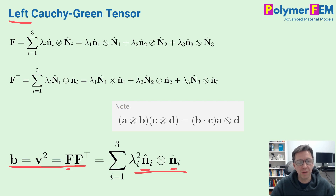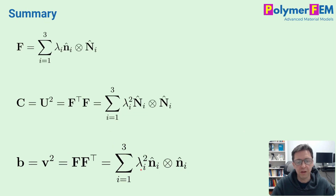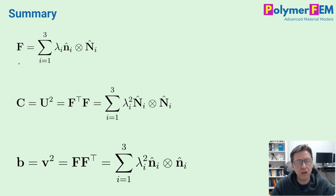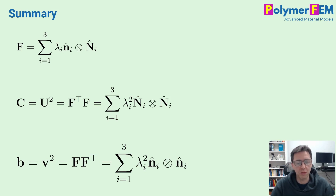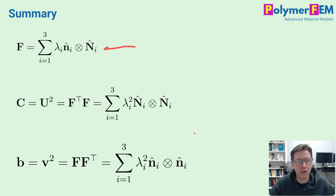To summarize, today I've shown three key equations: the spectral representation of the deformation gradient and the two Cauchy-Green tensors. Next we will use these to define strains and tie everything together. We had to do a bit more math here initially so we can use it productively later. This is the spectral representation of the deformation gradient and the two Cauchy-Green tensors. If you have any questions, you can ask them below.